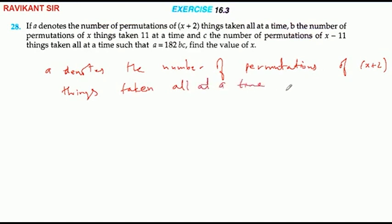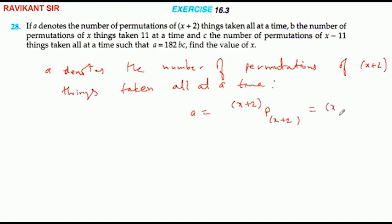ठीक है, इसका मतलब यह हुआ कि A जो है, X plus 2 P X plus 2 के equal है, यानी यह जाएगा X plus 2 के factorial के equal।